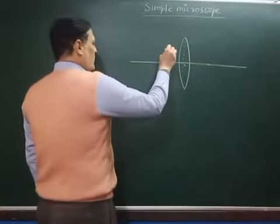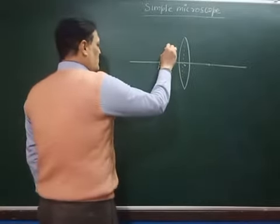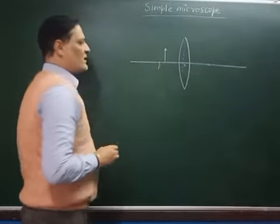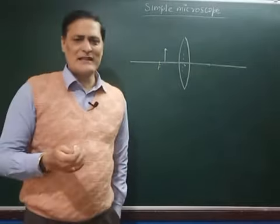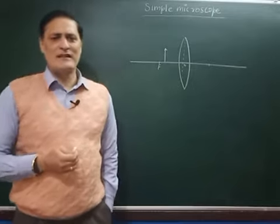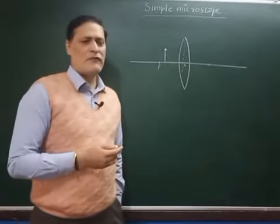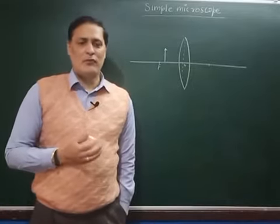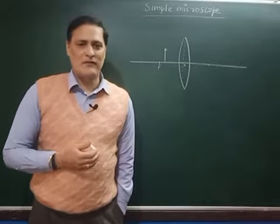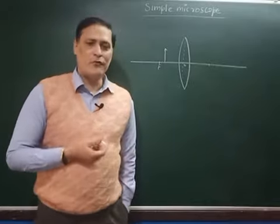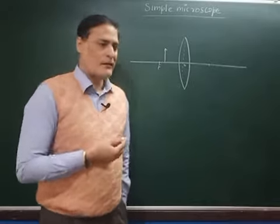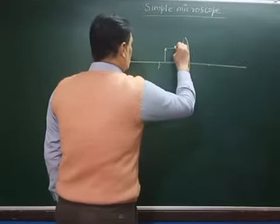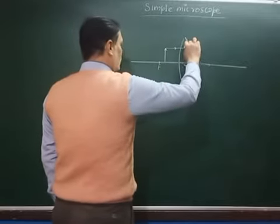We place an object here between the optical center and the focus. The first condition of the convex lens: it only produces a virtual image in the one condition when the body is placed between the optical center and the focus. Here we draw a ray which passes through the focus.